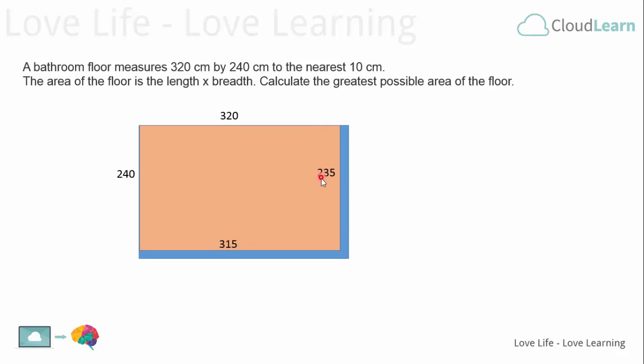Now the very first thing we'll look at is the least. As I said already, the breadth of the floor could be as little as 235 centimeters in order to be rounded up to 240 when we're taking it to the nearest 10 centimeters. If it was 234, then the nearest 10 centimeters would be 230 and not 240, so 235 is the lower bound of what this particular measurement could be.